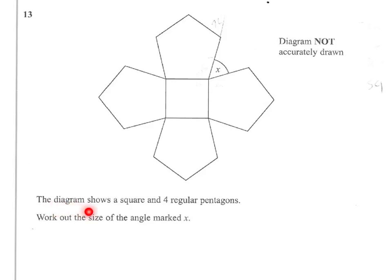The diagram shows a square and four regular pentagons. A pentagon, as you can see, is a five-sided shape. We've got to work out the size of the angle marked X.